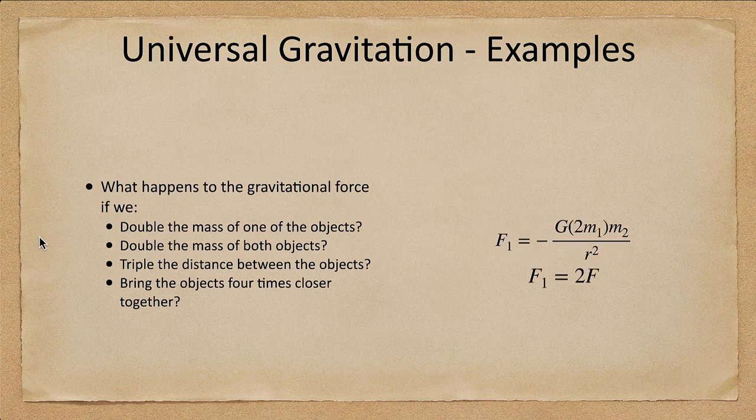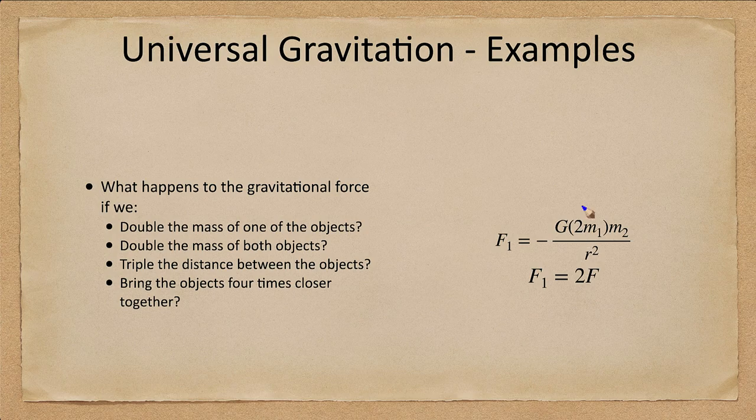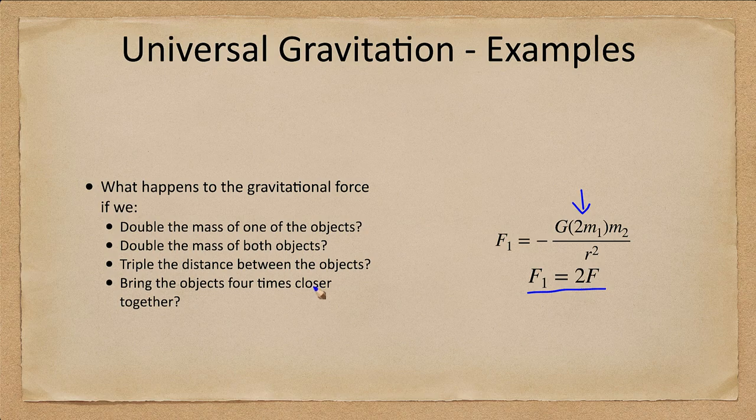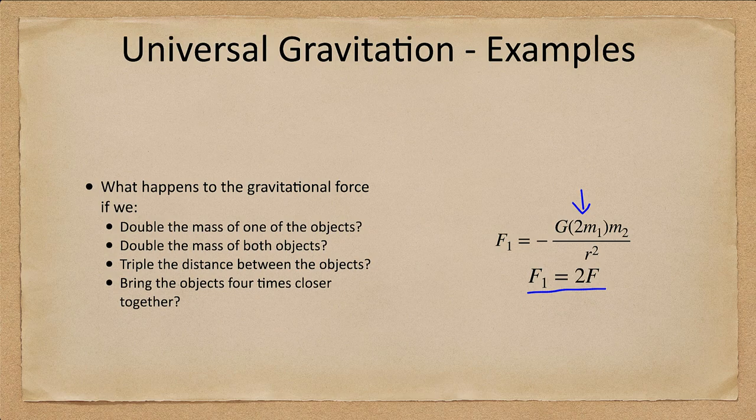And what you find first of all, what if we double the mass of one of the objects? Well all we've done is replaced m here by 2m. So when we multiply everything out we get just a factor of two in front of the force and this new force is twice the value. So if we double the mass of one of the objects the force of attraction will be twice as much.